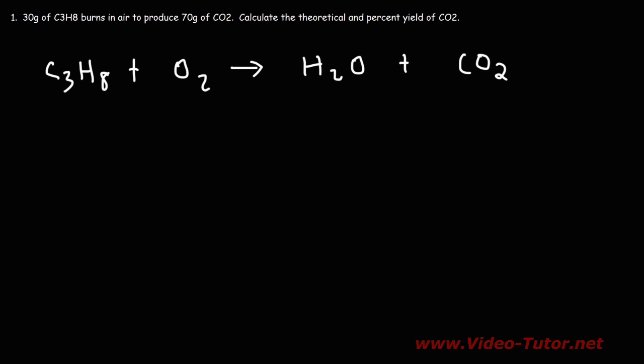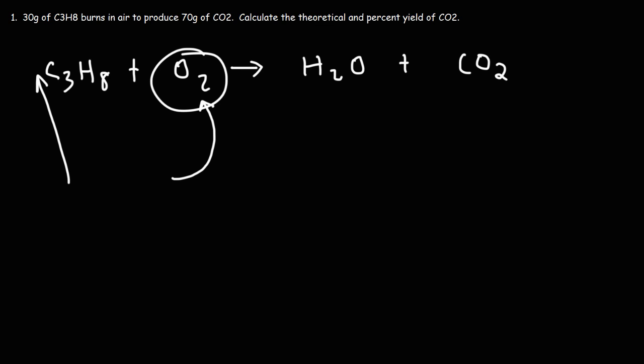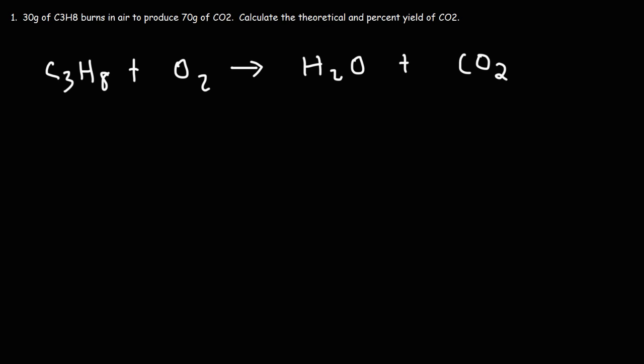The reason to save oxygen for last is because O2 is a pure element — you can change its coefficient without affecting any other elements. If you change the coefficient in front of propane, you're changing two elements, carbon and hydrogen. But putting a number in front of O2 only changes the oxygen atoms on the left side, which is why it's saved for last.